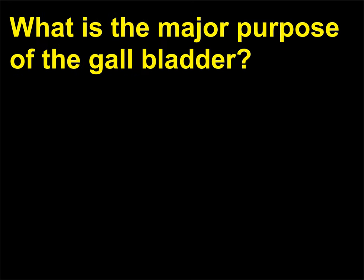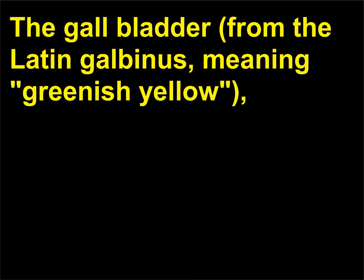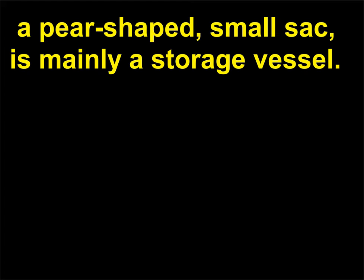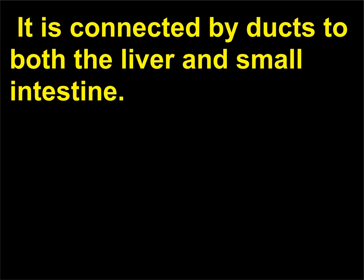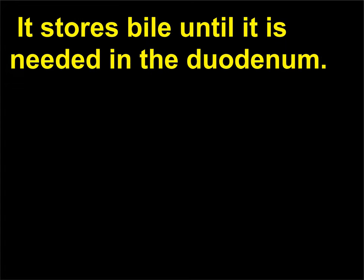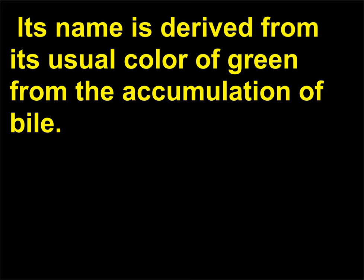What is the major purpose of the gallbladder? The gallbladder — from the Latin galbanus, meaning 'greenish yellow' — is a pear-shaped, small sac that is mainly a storage vessel. It is connected by ducts to both the liver and small intestine. It stores bile until it is needed in the duodenum. Its name is derived from its usual color of green from the accumulation of bile.